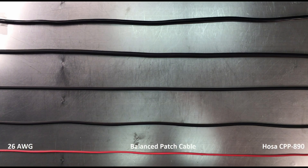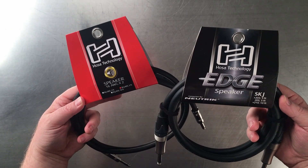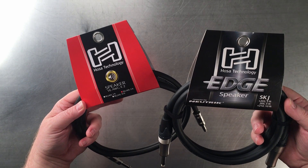It's important to know that when measuring gauge, the higher the gauge number is, the thinner the wire will be and the more resistance there is to the flow of current. The thicker a conductor is, and thus the less resistance there is to the flow of current, the lower its gauge number will be.